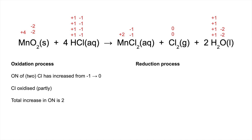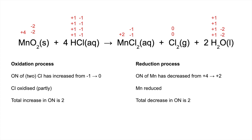For the reduction process, the oxidation number of manganese has decreased from plus four to plus two, so manganese is reduced. The total decrease in oxidation number is two, which matches the increase of two for those two chlorines. In terms of electrons, those two chloride ions — two of the Cl⁻ from the four HCls — each lost an electron, formed a chlorine atom, and combined to form the diatomic Cl2 molecule. The Mn4+ ion in MnO2 gained two electrons and became an Mn2+ ion.